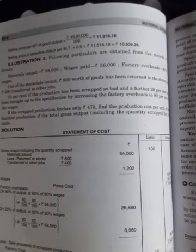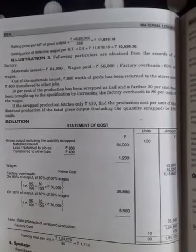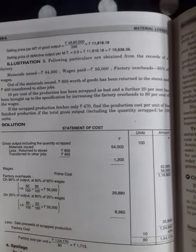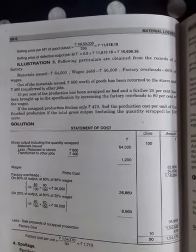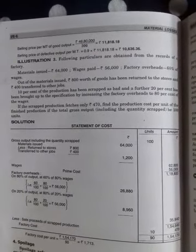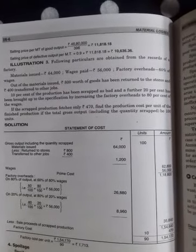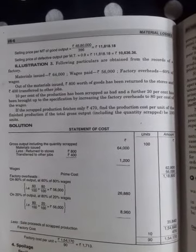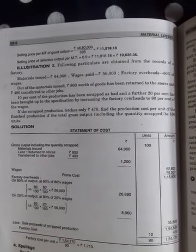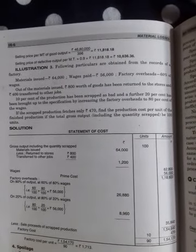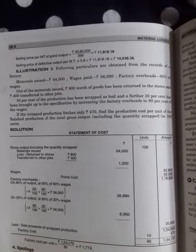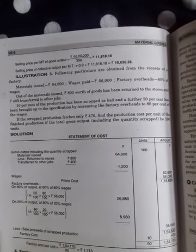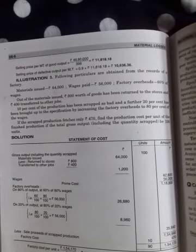Next, wages given are 56,000. 10% of production has been scrapped as bad, and further 20% has been brought up. So 80% times 60% of wages. Wages of 56,000 gives 26,880.